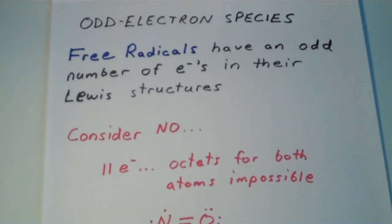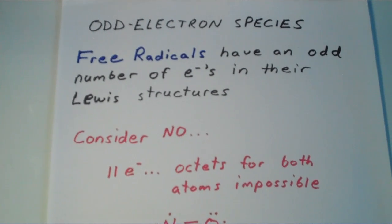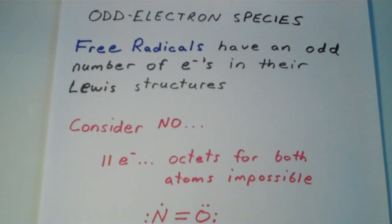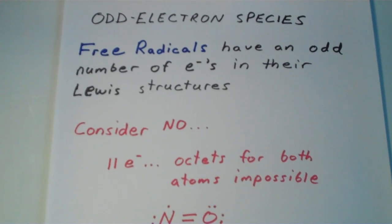The whole point of this video was to bring your attention that there do exist covalently bonded species out there that have an odd number of electrons. There aren't very many of them compared to the ones that have even electrons and obey the octet rule, but there are enough of them that it's worth talking about.